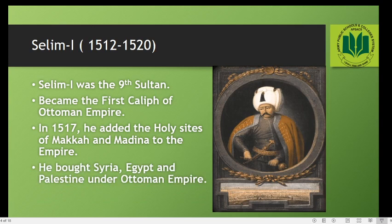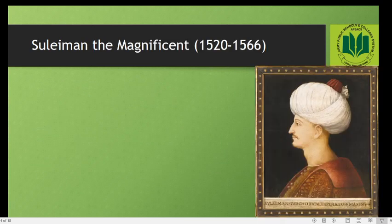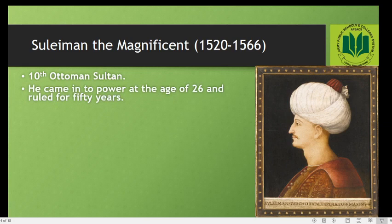Salim I died in 1520 and his throne was succeeded by his son Suleiman, also known as Suleiman the Magnificent. Suleiman became the 10th Ottoman Sultan, coming to power at the age of 26, and he ruled for 50 years. He was called 'the Magnificent' because his era is known as the golden age of the Ottoman Empire and he was one of the most just and fair rulers, also known as the Lawgiver.